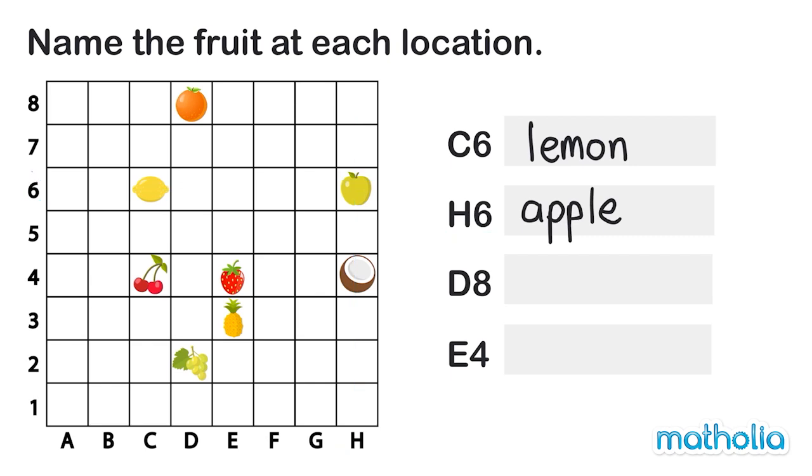The next grid position is D8. Looking up column D and across row 8, we find an orange. So an orange is at D8.